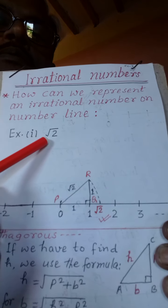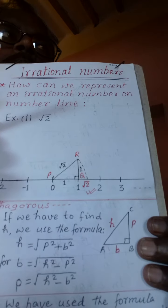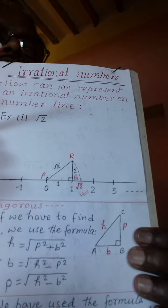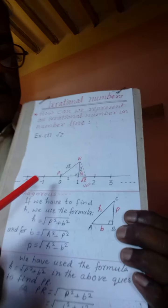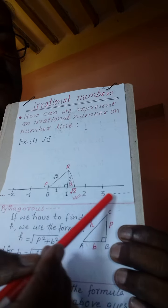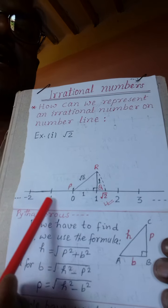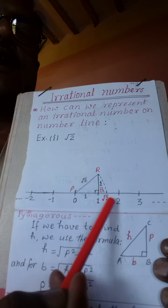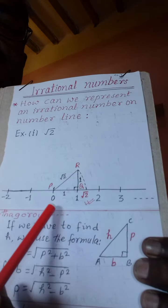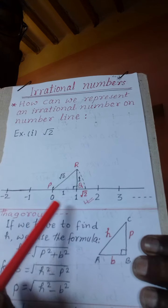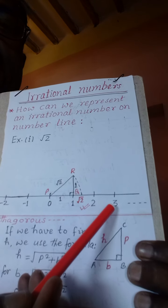For this, we follow some steps. Step 1: We take a straight line. As you can see on the screen, we take a straight line and mark 0, 1, 2, 3... and in the left side of 0, minus 1, minus 2, and so on.